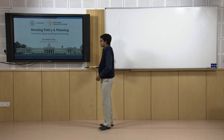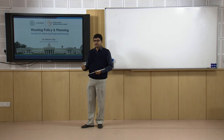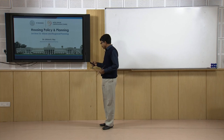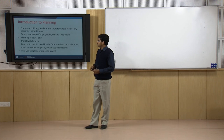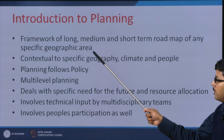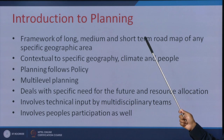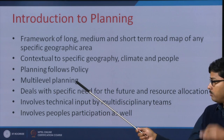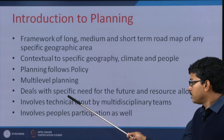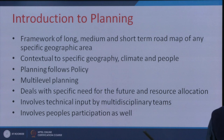Today we will see how urban and regional planning works in a policy way after the policy is framed for the region and the cities. Before we go to today's lecture, these are the points we discussed in the last lecture: the various parameters of planning. It is contextual, specific to the geographic area, and it can be long, medium, and short term. The planning follows policy mandates and is done at multilevel planning, from higher to lower.